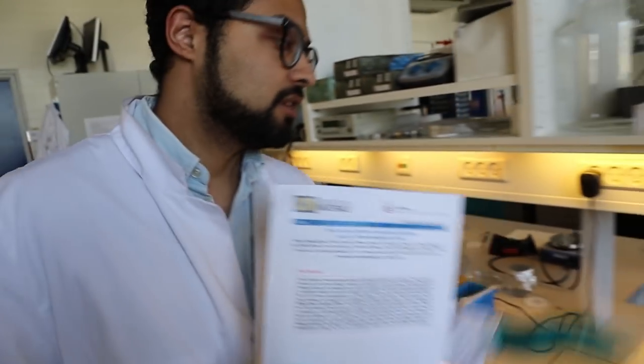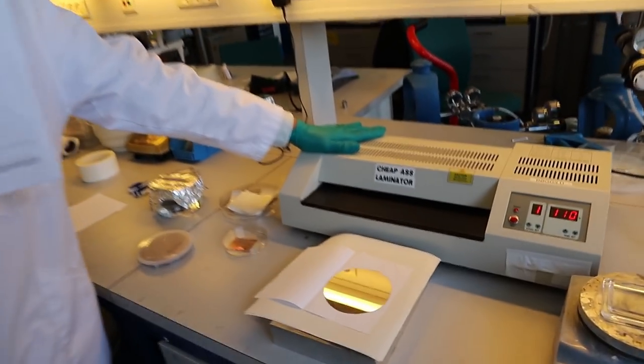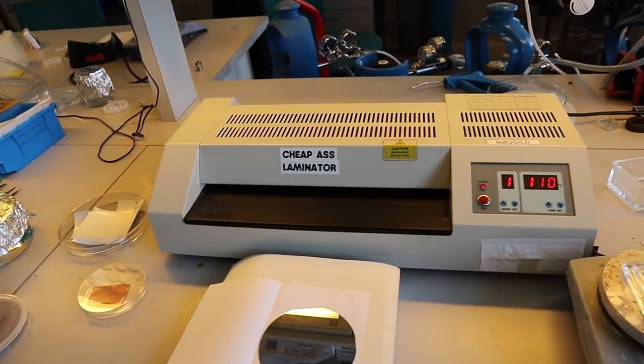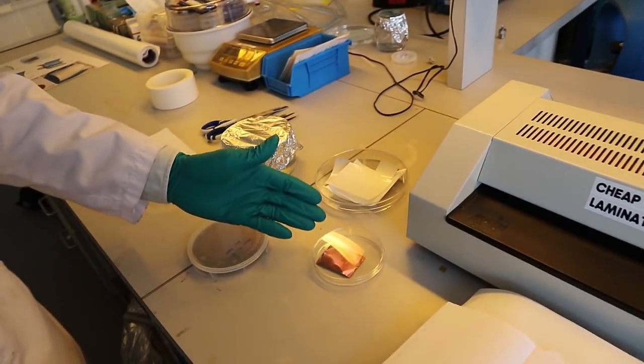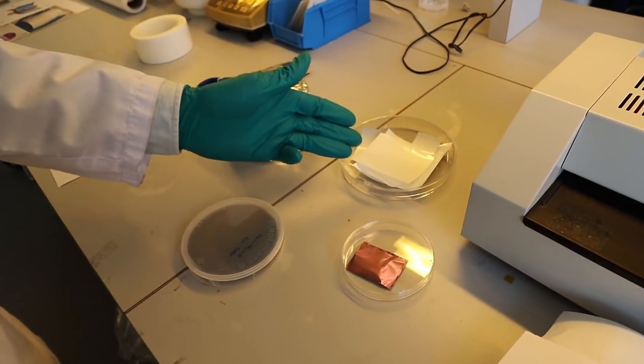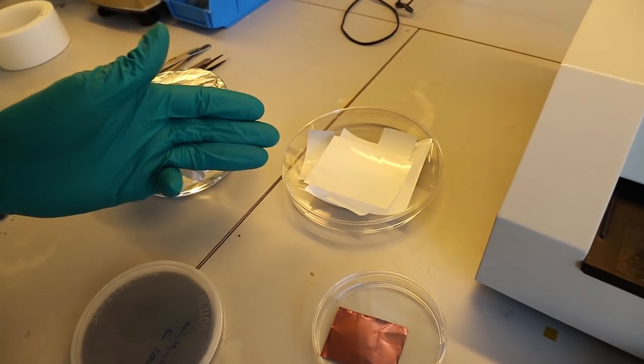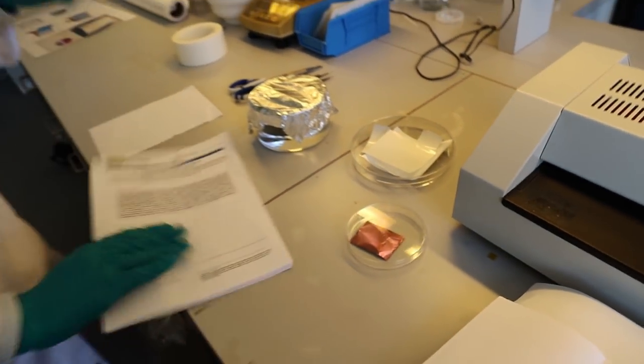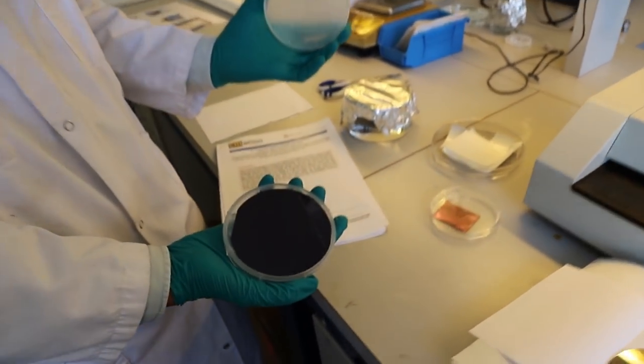We have here our commercial laminator, we have water, we have graphene on copper foil which we have oxidized in water overnight, and we have PVA foils which we are going to be using for our transfer. Our transfer today is going to be on a wafer of silicon dioxide.